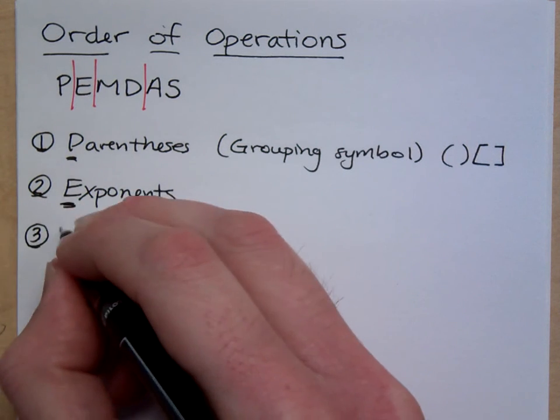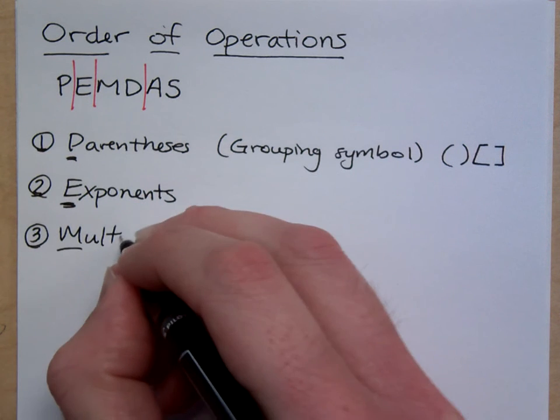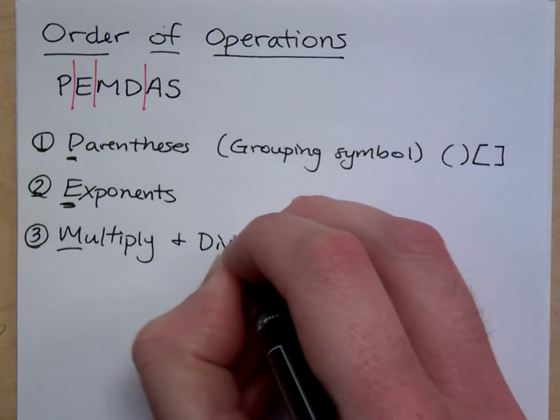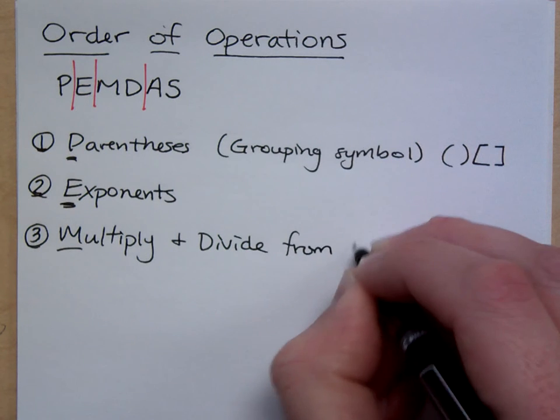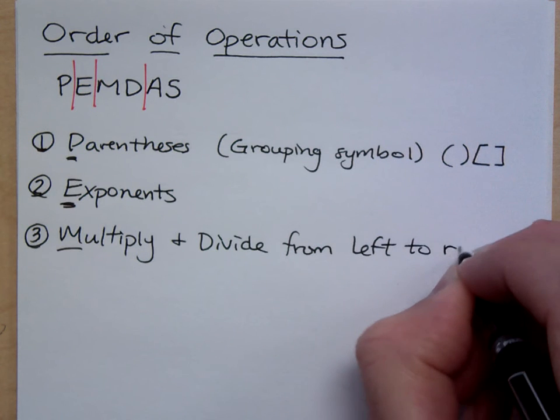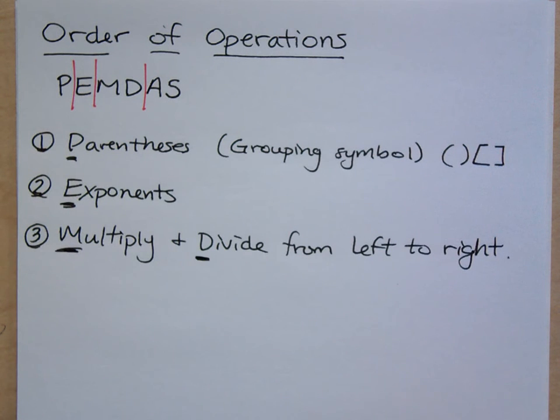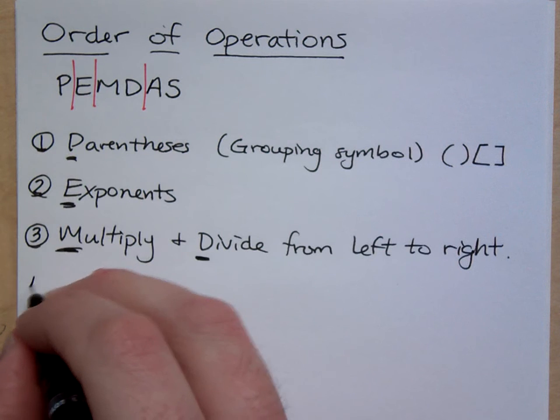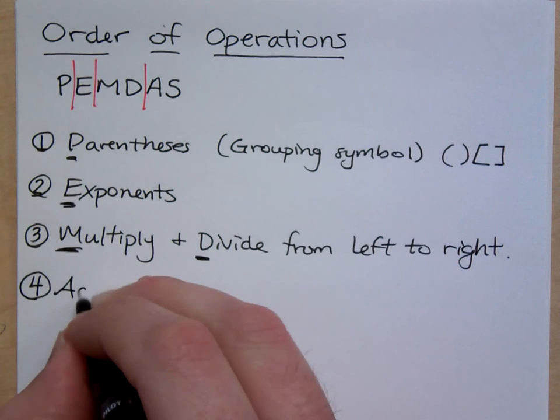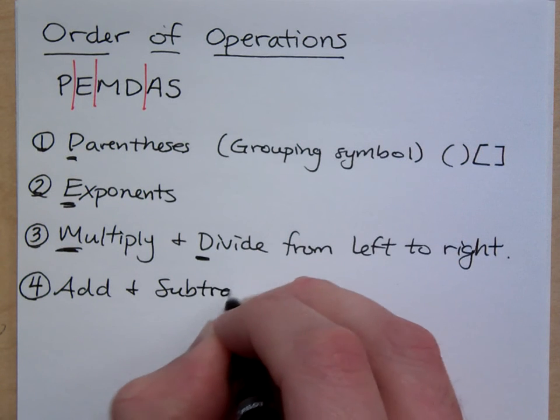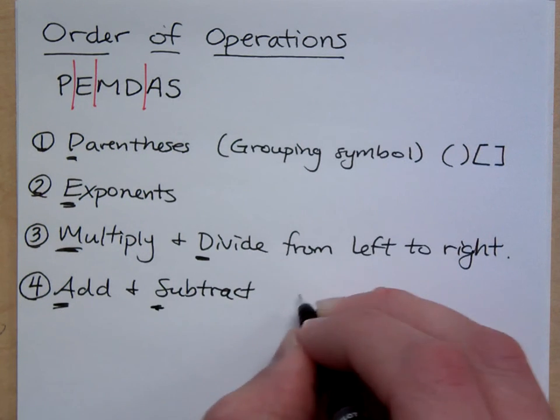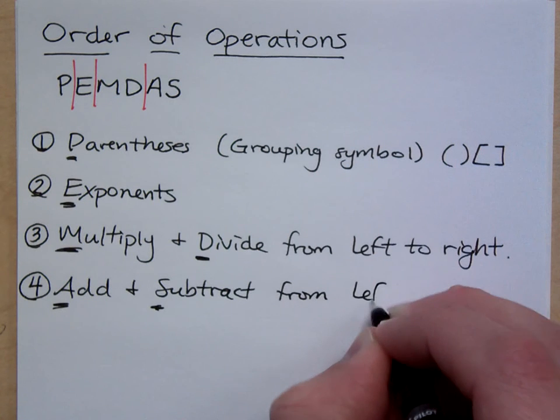Step three is multiply and divide from left to right. See, multiply and divide. This happens in the same step. Multiplication and division are sticky mathematical operations. They will stick numbers together. They're kind of gluey. Does that make sense? Think about multiplication. Things are stuck together. And so, you have to take care of those guys from left to right. The last step we have here is to add and subtract from left to right.